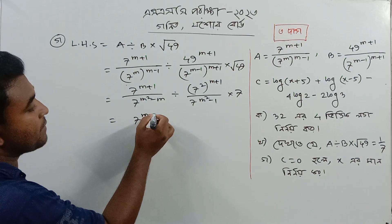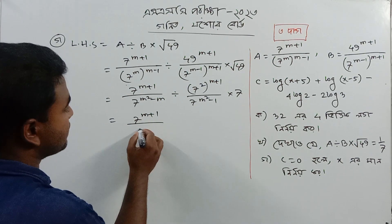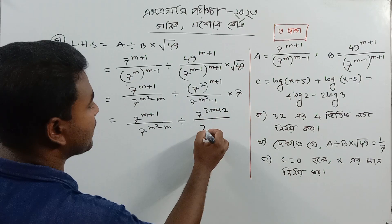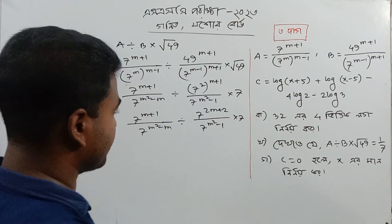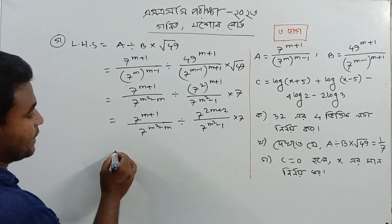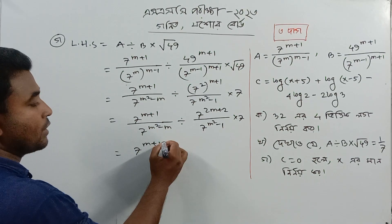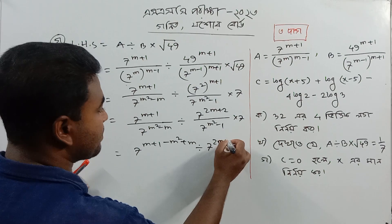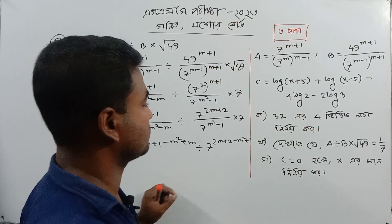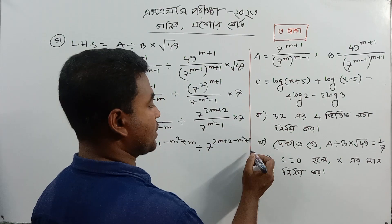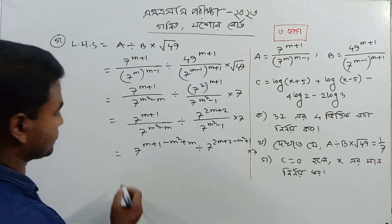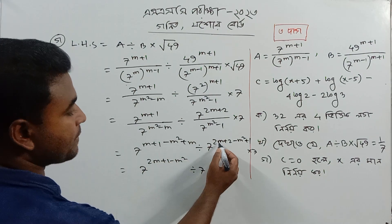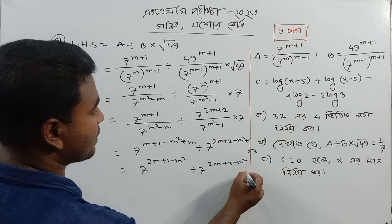Then we have 7a power m plus 1, which is 7a power m squared minus m, and 7a power 2m plus 2. Then 7a power m squared minus 1 into 7. Then 7a power m plus 2m plus 3 minus m squared into 7.